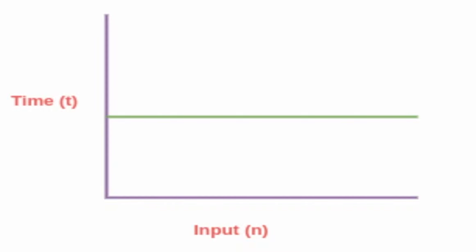For O(1), the graph shows that on the x-axis, the size of input is represented by n, and on the y-axis, running time is expressed by time t. As we can see in the graph, the running time of the algorithm remains constant, regardless of the size of the input.